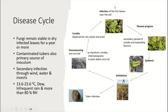In the life cycle, infection of the first leaves near the soil takes place through conidia — rain splash or wind. Secondary spread also takes place through conidia, and expansion of lesions takes place.